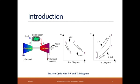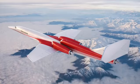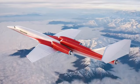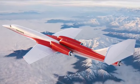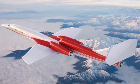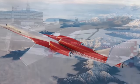Early jet aircraft used turbojet engines which were relatively inefficient for subsonic flight. Modern subsonic jet aircraft usually use high-bypass turbofan engines, which offer high speed with fuel efficiency comparable to piston and propeller aerodynamic engines.